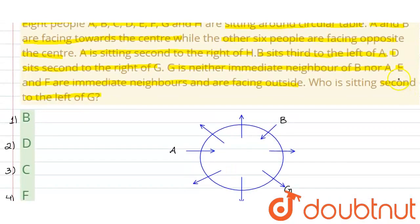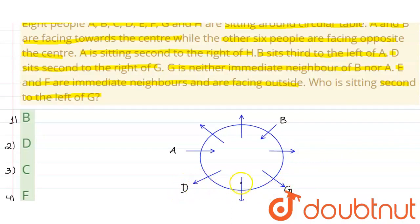Ab aate hain wapas: D sits second to the right of G. Means G ka jo right hai, uske second position pe D ki position hai. So, G se second position jo ho gayi, wo ho gayi right side mein - this one. So, this is the position of D: first position, second position - D is baitha hua hai.